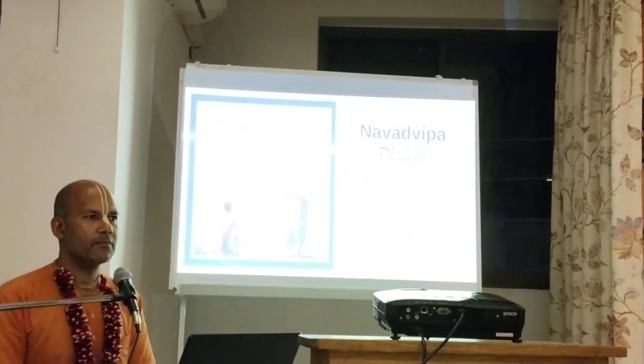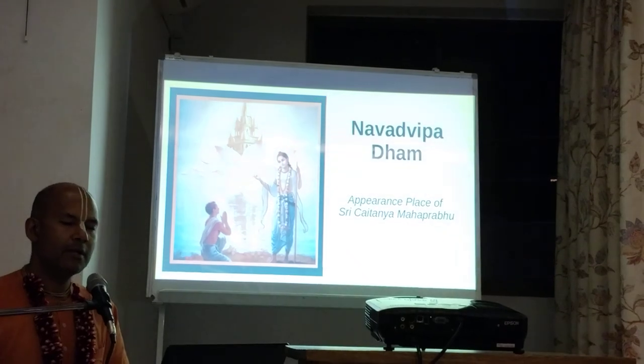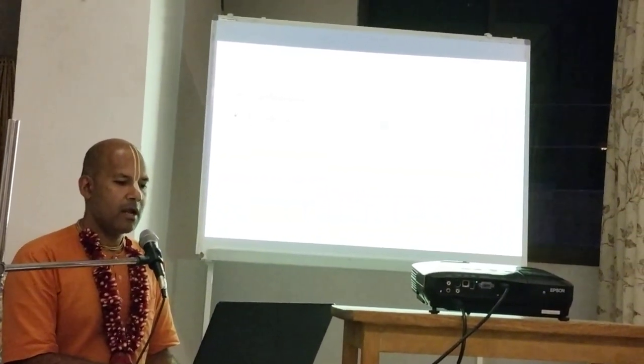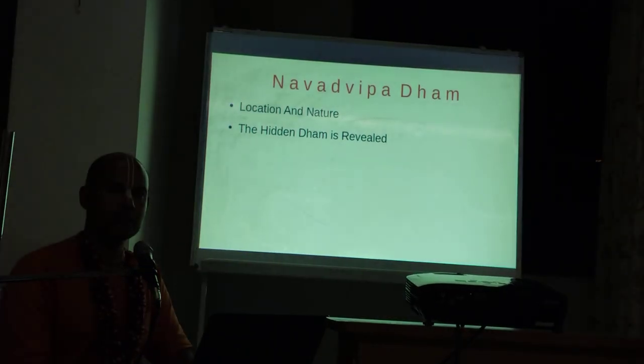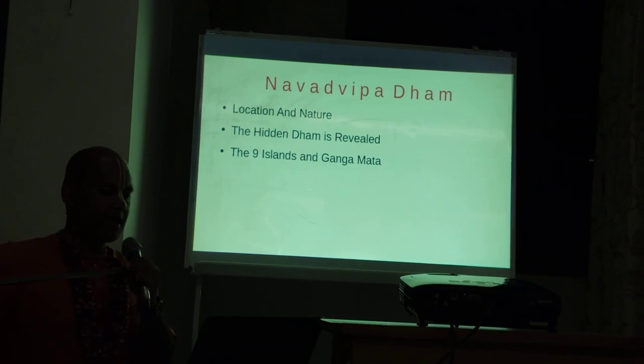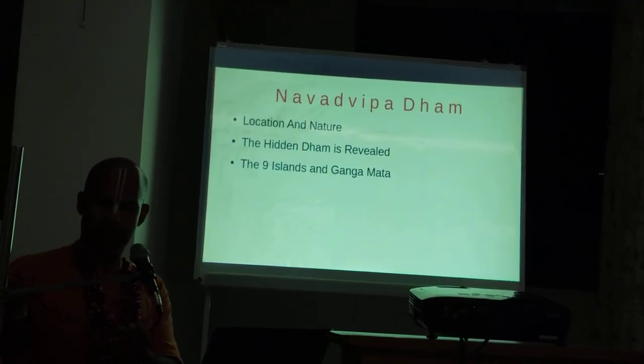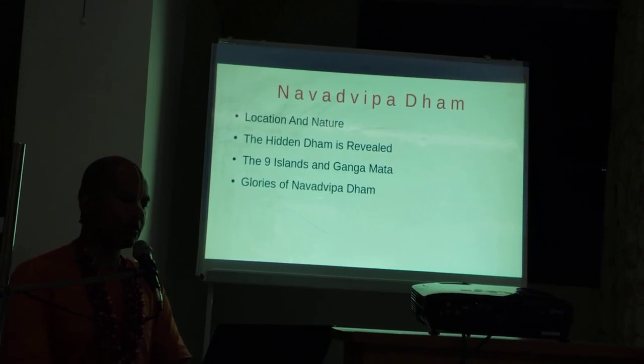Hare Krishnam. We are continuing with our seminar on Shri Chaitanya Mahaprabhu. Yesterday we covered Pancha Tattva and Gaurukhita. Today we are covering Navadvip Dham. Navadvip Dham is the place where Chaitanya Mahaprabhu appeared. Whenever avatars appear, they appear in a particular place which then becomes sanctified. Today we will cover the following topics: Navadvip Dham, its location and nature, how the Dham was hidden and then revealed, the nine islands, Ganga in Navadvip Dham, and the glories of Navadvip Dham according to Shastra.